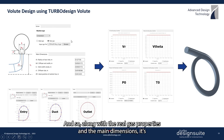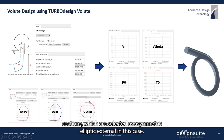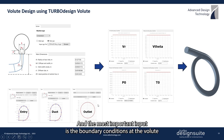Along with the real gas properties and the main dimensions, it's also possible to define the cross-section shapes at the entry duct and the outlet sections, which are selected as asymmetric elliptic external in this case.